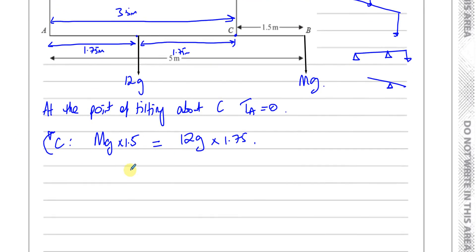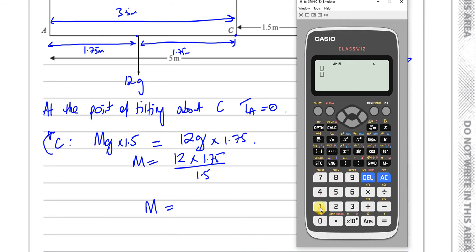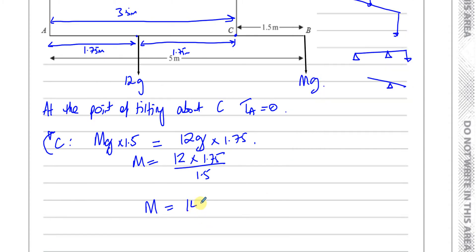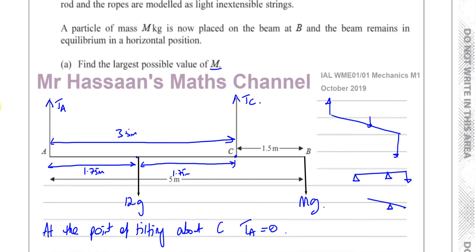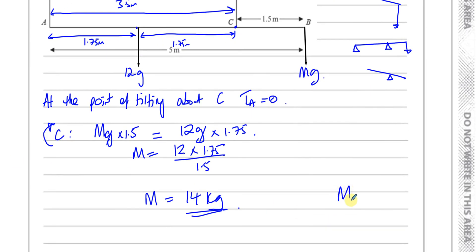The g's cancel out, giving M = (12 × 1.75) / 1.5 = 14. So the largest possible value of m is 14 kilograms.